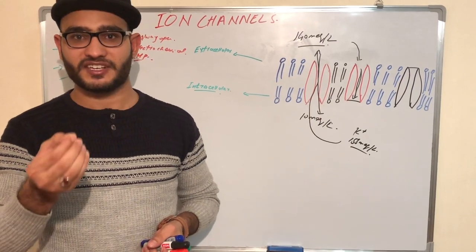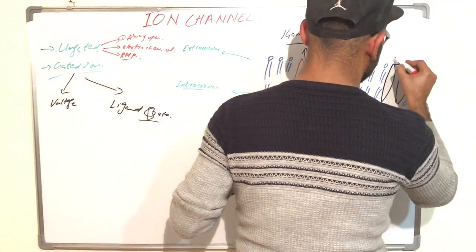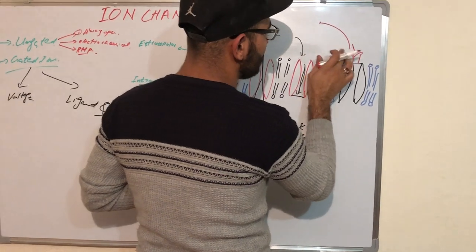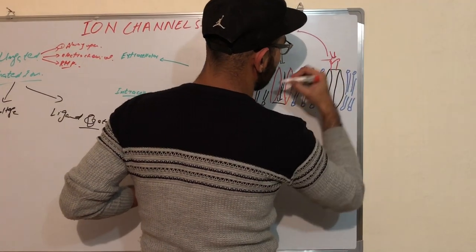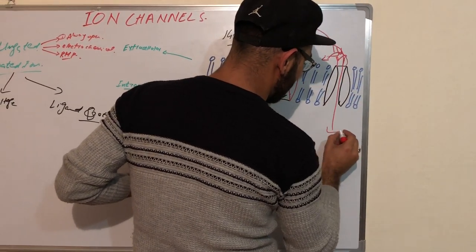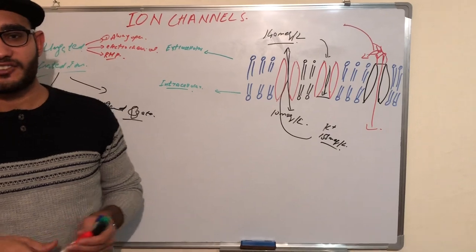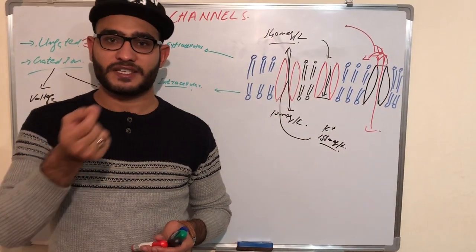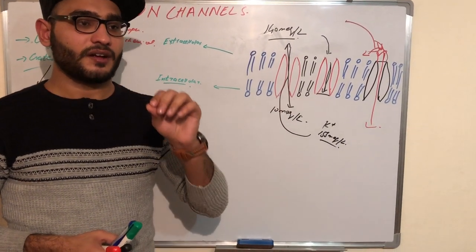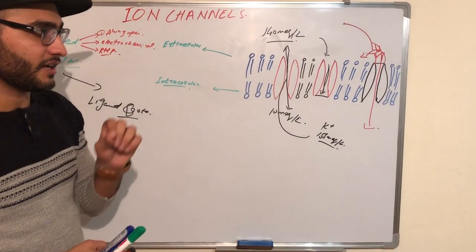Ligand-gated channels are channels which have a specific receptor for opening. When any drug or neurotransmitter binds with the specific receptor, the structure of the gate changes and the drug or molecule enters into the cell. For example, a specific key only opens a specific door — every cell has a specific receptor and every drug has a specific receptor for entry into the cell.